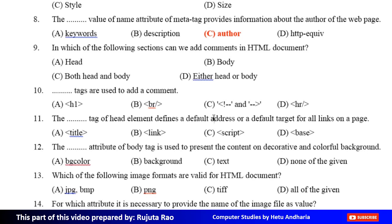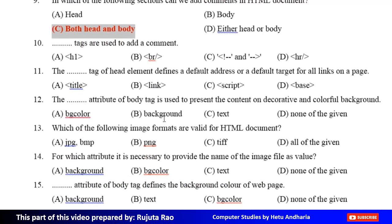Both Head and Body. Tenth MCQ: Dash tags are used to add a comment. Option A: H1 tag, Option B: BR slash tag, Option C: Comment tag, Option D: HR slash tag. The correct answer is Option C, Comment tag.